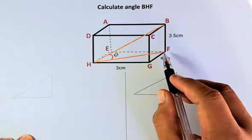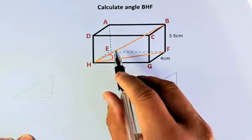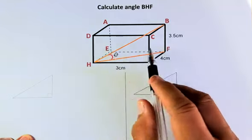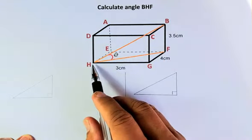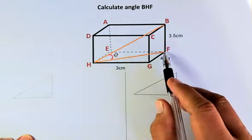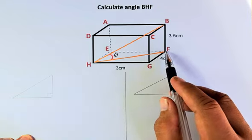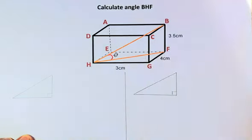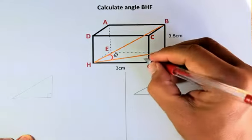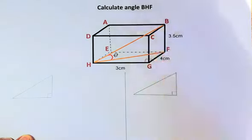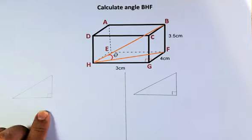Before we find HF, we have to look at this bottom part of the cuboid. So H, E, F, G, H is the bottom part of the cuboid and HF is the diagonal. So the angle FGH is 90 degrees. At the corner of the wall is going to be a 90 degrees angle.